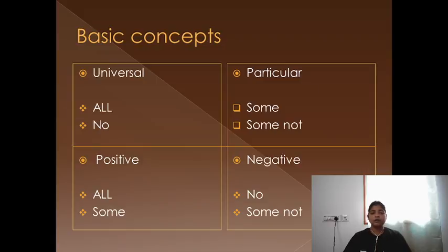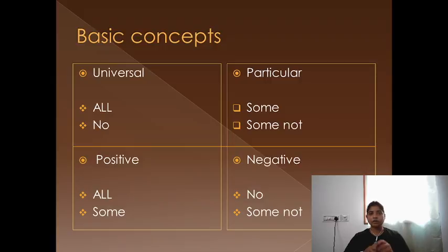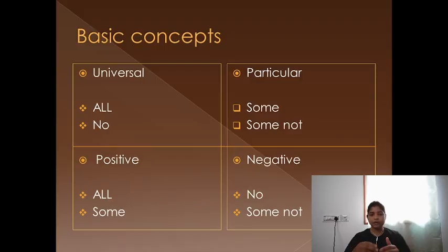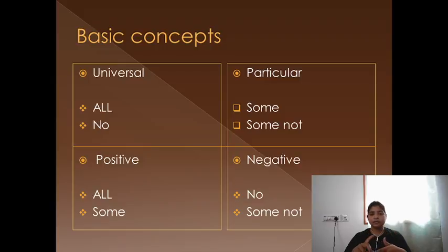There are two types of statements: universal and particular, based on the words included. If the statement includes 'all' and 'no', it is a universal type of statement. If 'some' and 'some not' are included, it is a particular type. We can also differentiate statements based on positive and negative: if positive, it includes 'all' and 'some'; if negative, it includes 'some not' and 'no'.